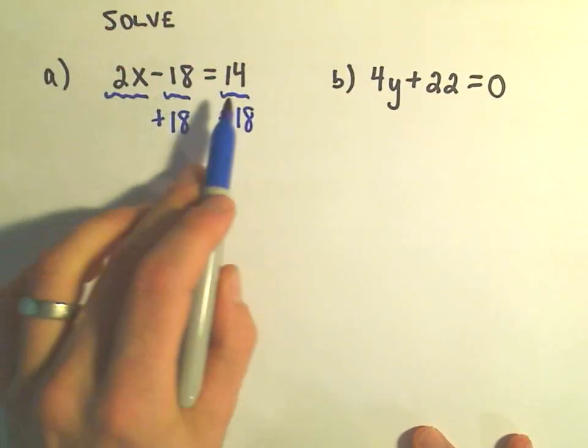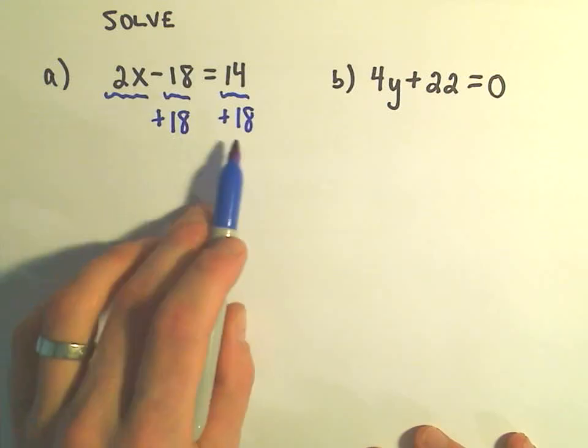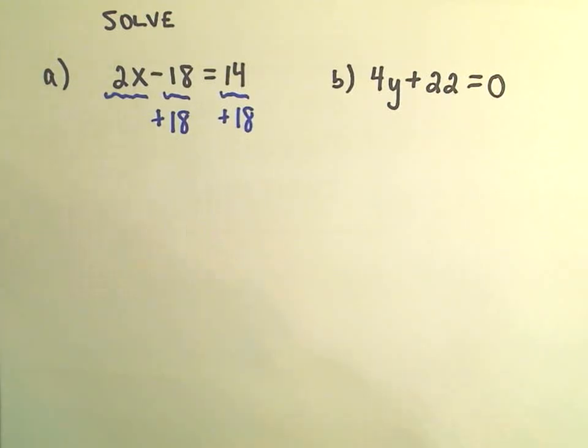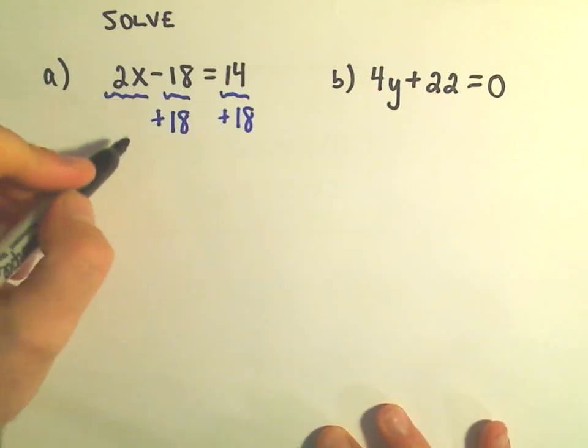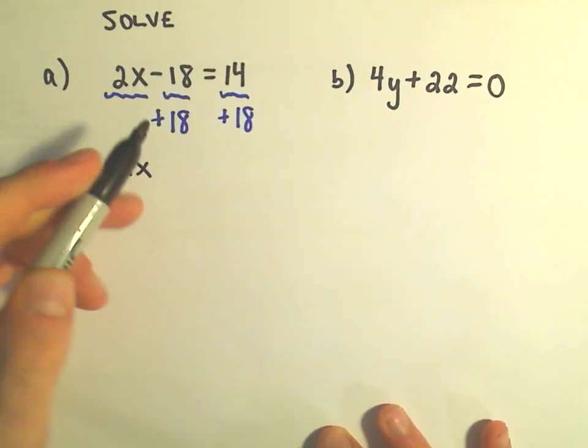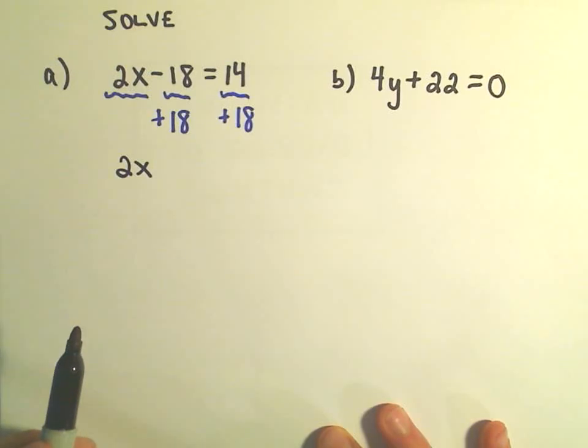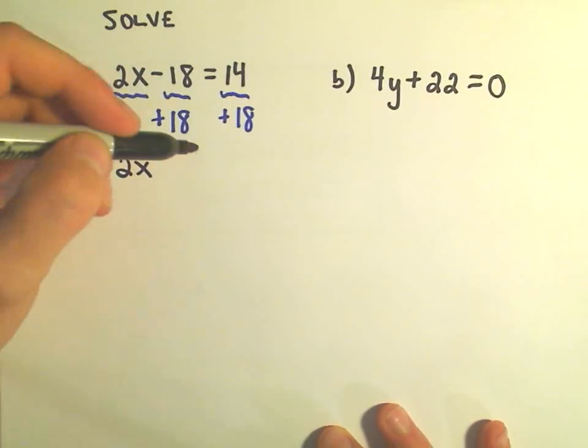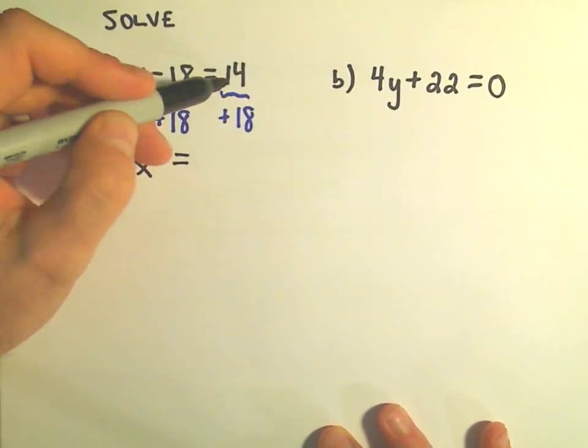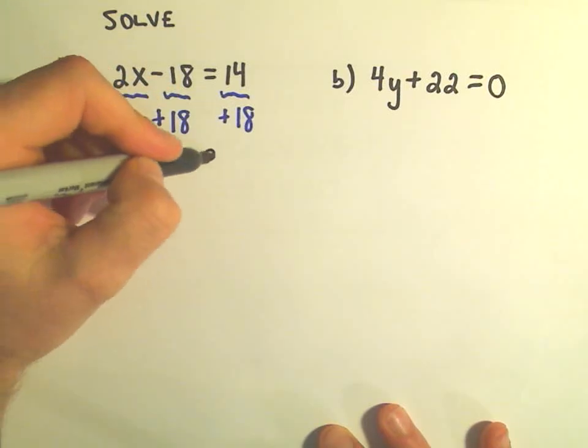And if you have two things that are equal, if you add 18 to both of them, they would still be equal. So we're left with 2x on the left. Minus 18 and plus 18 is just 0, so that cancels out or goes away. We have 14 plus 18, which is 32.